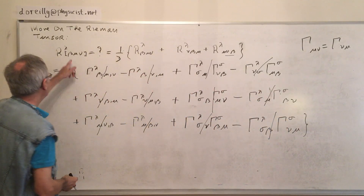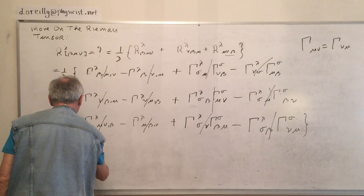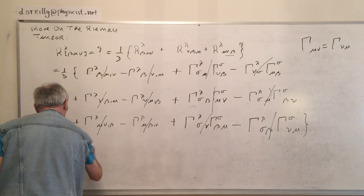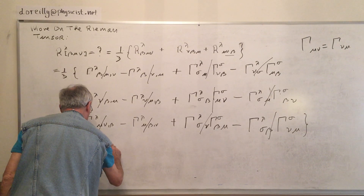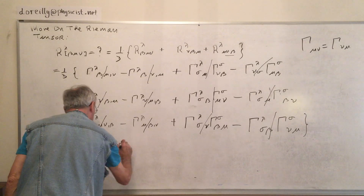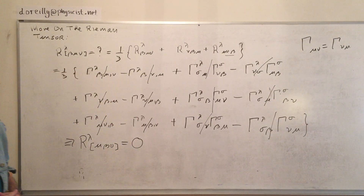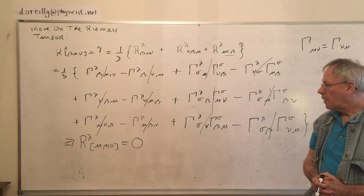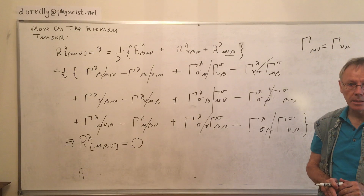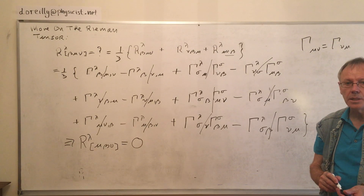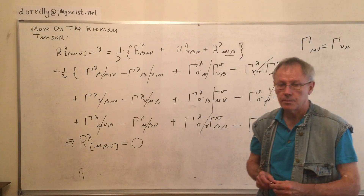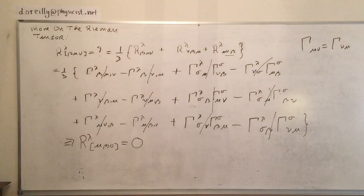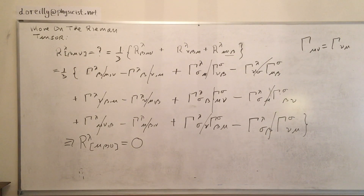So we found that this anti-symmetrization is zero — and this is a very important result for the Riemann tensor. We will digest that now, and we'll come back to the Einstein tensor in the next class. Thank you.